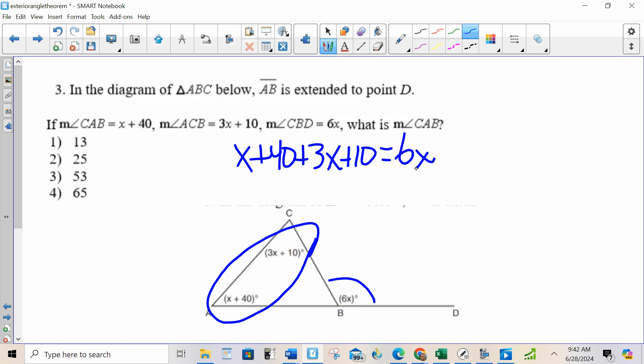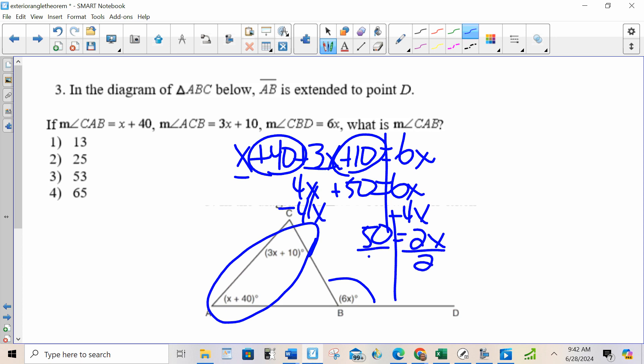From there, I do algebra. I combine like terms. 4X plus 50 equals 6X. Bring all the X's to one side. Divide. X is 25.